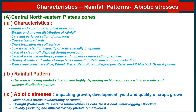Discussing characteristics, rainfall patterns, and abiotic stresses of different zones: The Central North-Eastern Plateau zone has humid and subhumid tropical monsoon, erratic and uneven distribution of rainfall, late and early cessation of monsoon, coarse textured soils, crust formation on soil surface, low water retention capacity especially in uplands, lack of safe runoff disposal during monsoon, lack of water harvesting systems, drying of wells and water storage tanks impacting rabi season crop production. Main crops grown are rice, wheat, maize, ragi, potato, groundnut, rapeseed, mustard, gram, and pulse crops.